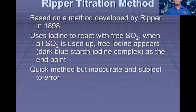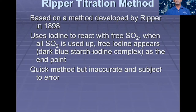Today we'll talk about the Ripper titration method, based on a method developed by Ripper in 1898. It uses iodine to react with the free SO2. When all the SO2 is used up, the free iodine appears as a dark blue starch-iodine complex as the endpoint. It's a quick method, but somewhat inaccurate and subject to error. However, as I have experienced in the past, some other methods are not very accurate either, so this is relatively reliable and used in wineries all over the world.